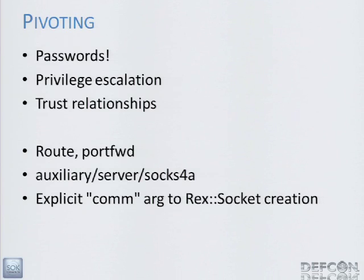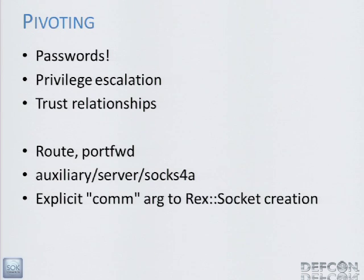Now the really fun stuff: pivoting. Going from this box to something more interesting — not necessarily on another system, but potentially pivoting to a new role on the local system: going from a user to root, or a user to another user. There are trust relationships too — like this box being allowed to connect up to a MySQL server. The way Metasploit does pivoting has a few different mechanisms, starting with the route and port forward commands, which allow you to send all of Metasploit's packets through a compromised machine.